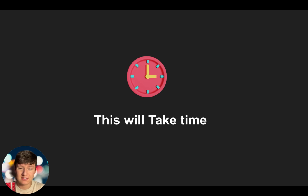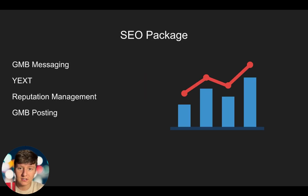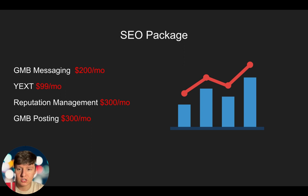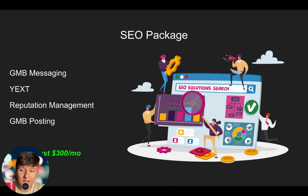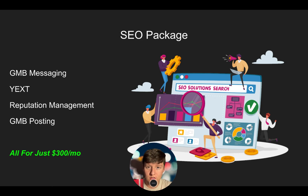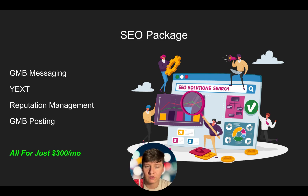Again, clarify to your clients that this will take time — it's not overnight. But if they're diligent, they will reap the rewards and get a lot of organic leads. Putting these four things together is the SEO package. You can name this package whatever you want to increase its perceived value. They're going to get Google My Business messaging, Yext, reputation management, and the ability to post on Google My Business from your platform. Individually, these would cost around $200, $99, $300, and $300 a month — a total value of around $900 a month. But you can tell your client you'll discount this offer to just $300 a month.